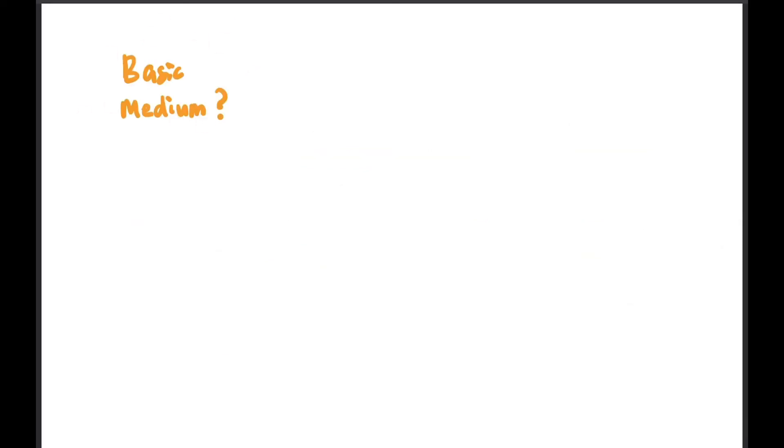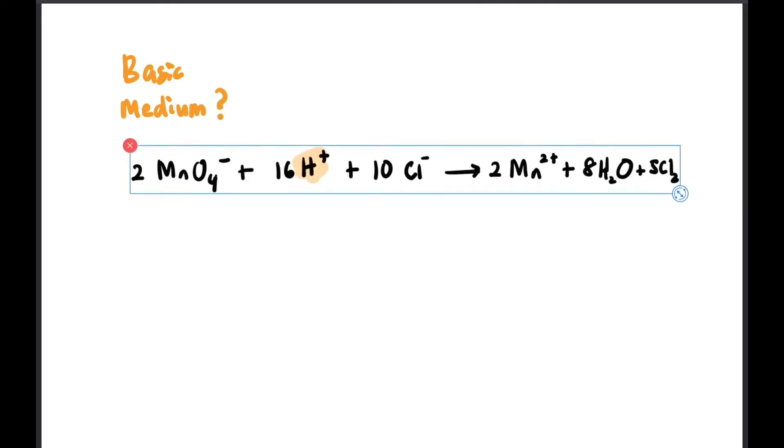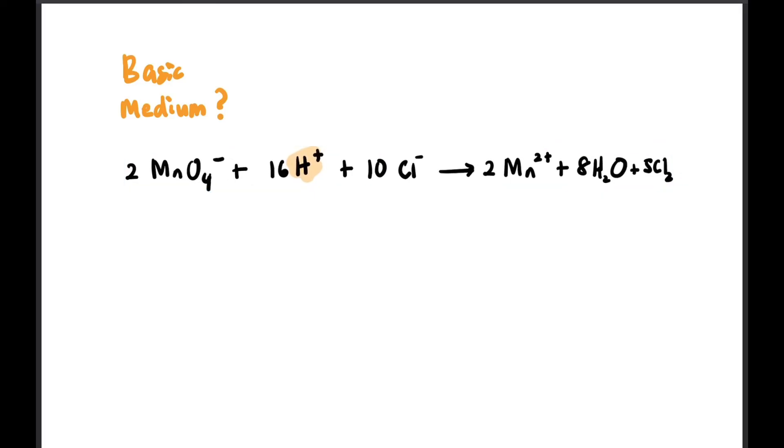What about basic medium? Basically we just take the same steps. And this is our final equation. What we do with the final equation from those steps is we just add OH⁻ on both sides of the equation. And how many to add depends on how many H⁺. So if we see there are 16 H⁺, then in this case we add 16 OH⁻ on both sides.